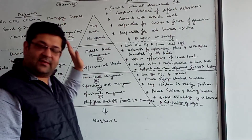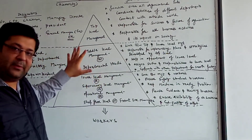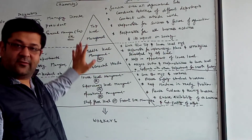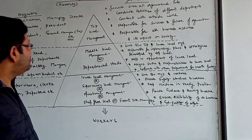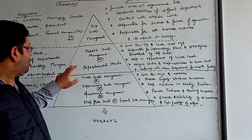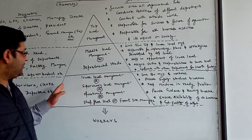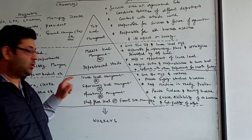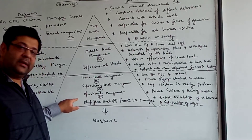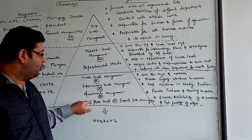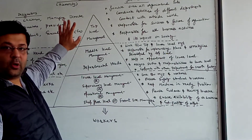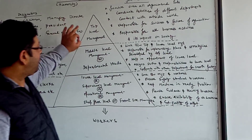This hierarchy will be discussed through a pyramid structure, which will help you in distinguishing between different levels of management. There are three main levels of management: top level management, middle level management (also known as department head), and lower level management, also called supervisory level, operational level, shop floor level, or front line managers. In the hierarchy, first we will discuss top level management.